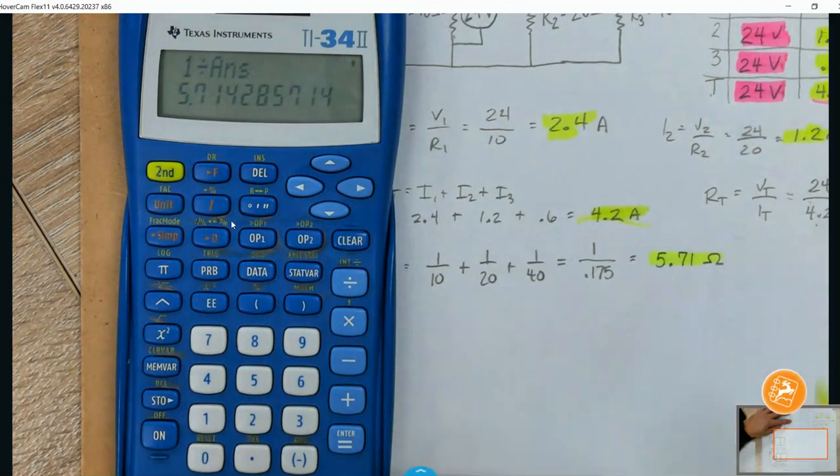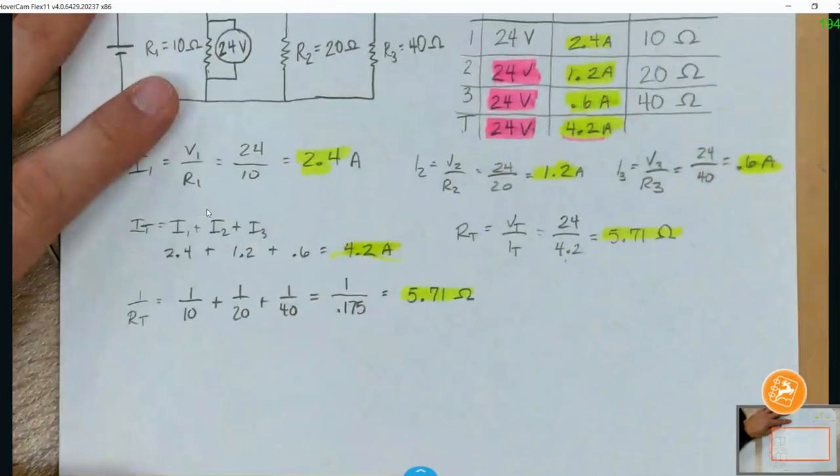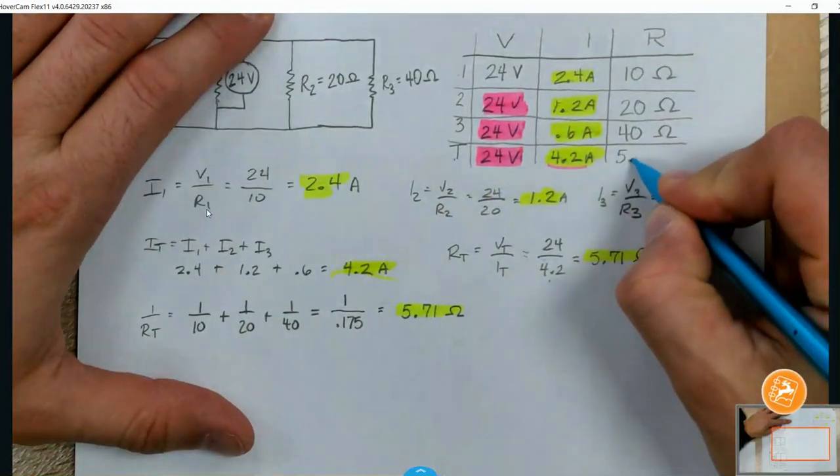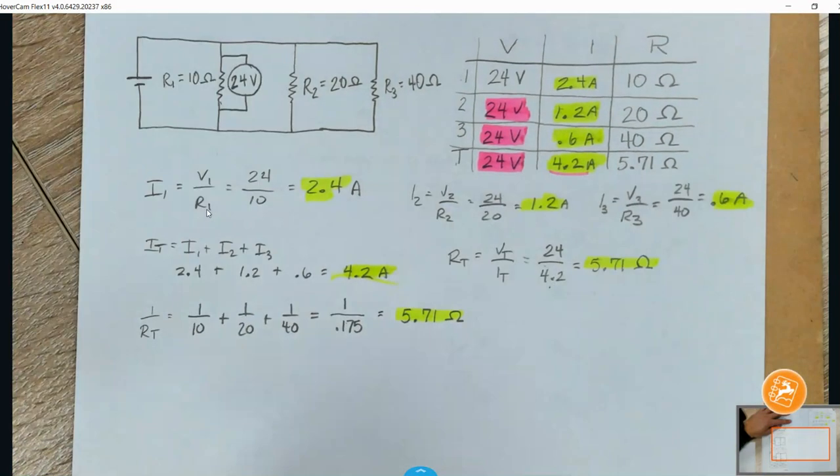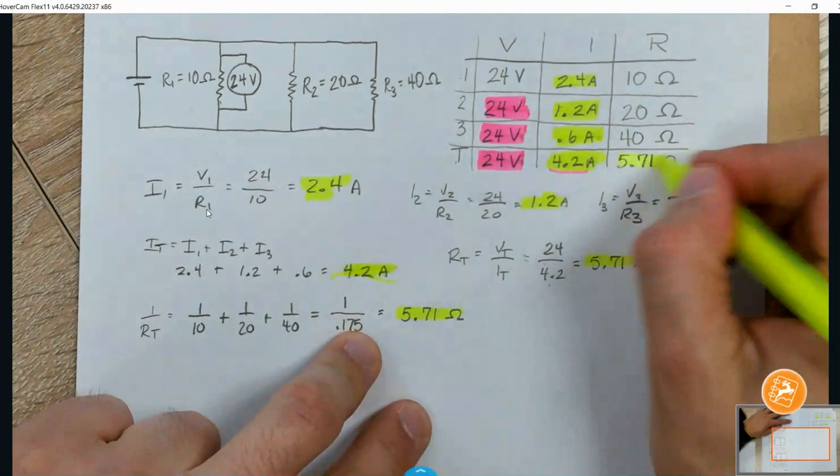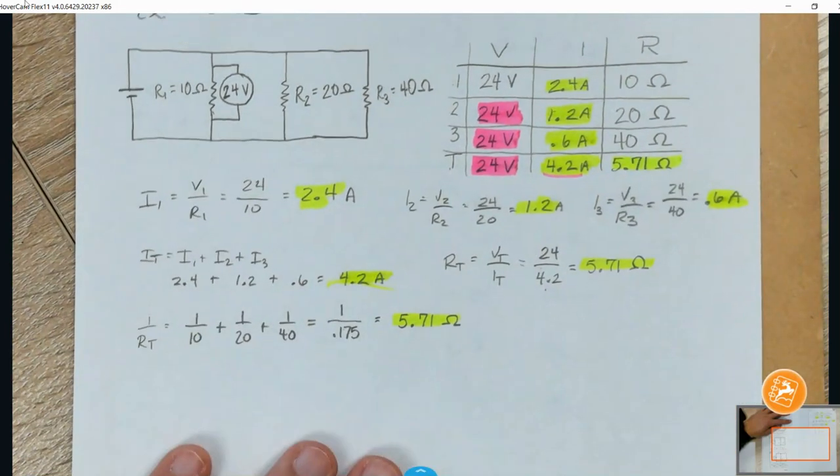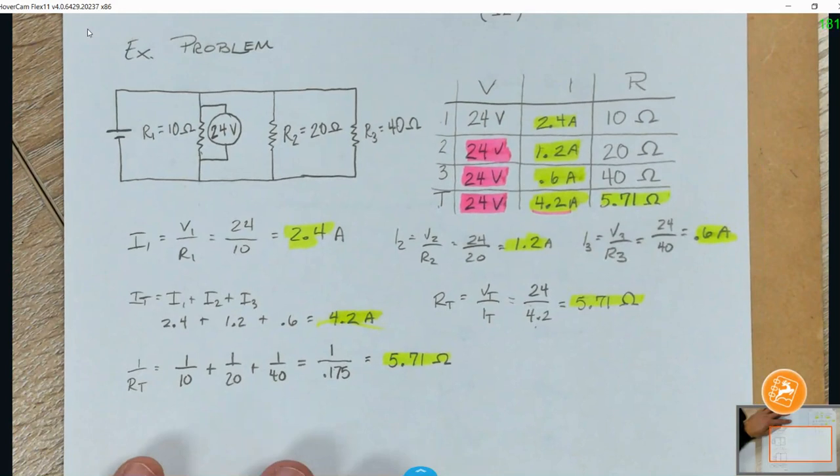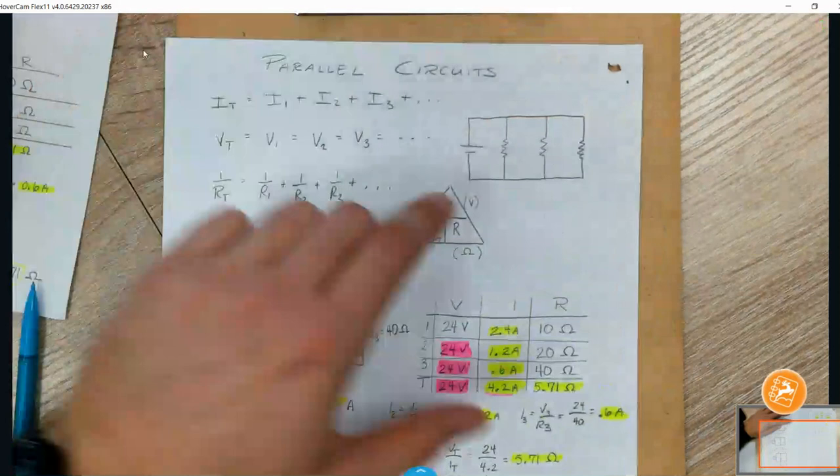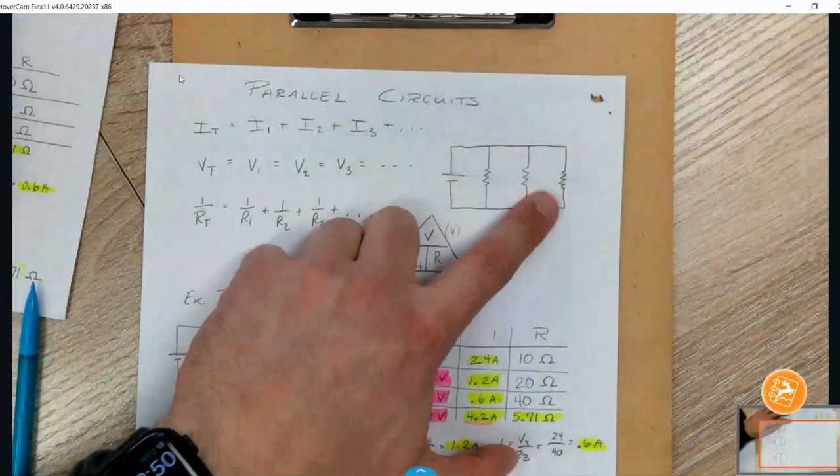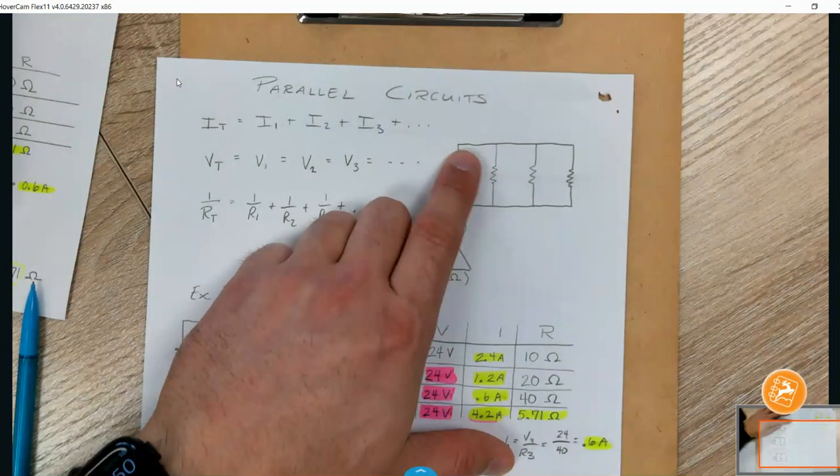So, either way, you can go – you could have gone about solving for the RT or REQ. Okay, that is our example problem here for our parallel circuit. So, to quick recap. How do I identify if it's a parallel circuit? There's multiple pathways that the current can take to go from start to finish.